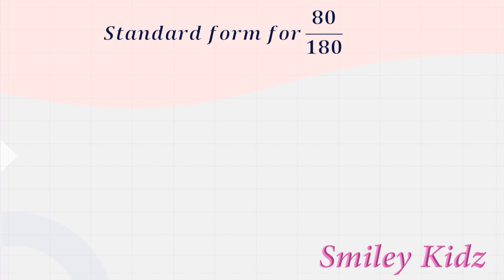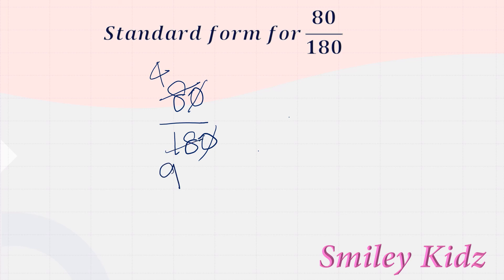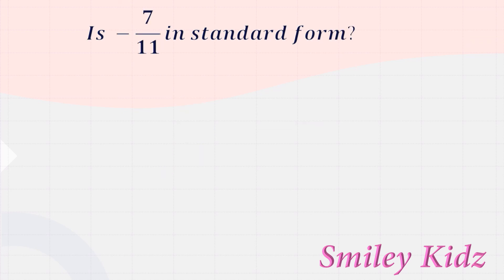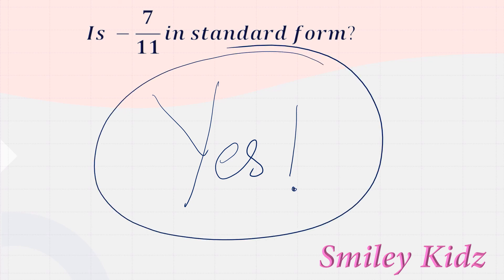Moving to the next question: Find the standard form for 80/180. The zeros cancel, giving us 8/18. Then 2 times 4 is 8 and 2 times 9 is 18, so the standard form is 4/9. The standard form for 80/180 is 4/9. Next question: Is −7/11 in standard form? Yes, it is in standard form because the numerator and denominator do not have any common factor other than 1. So yes, −7/11 is in standard form.